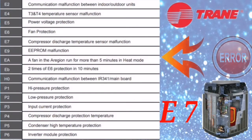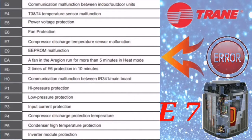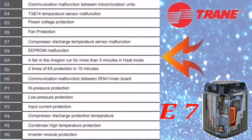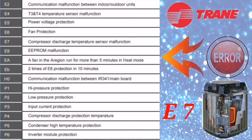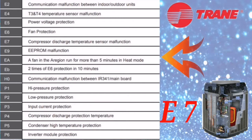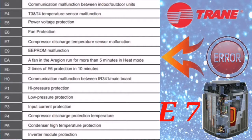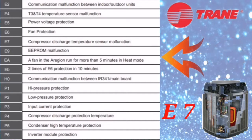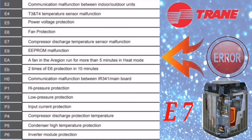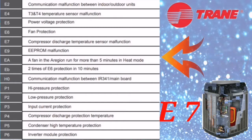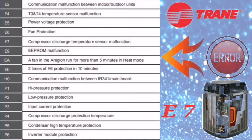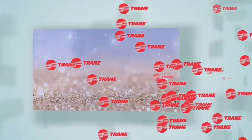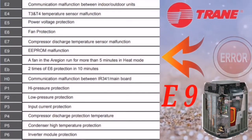The next error code is E7, which means compressor discharge temperature sensor malfunctioning. For this error, check only the sensor components. First, check the resistance of the sensor, then check the placement and the cable coming from the outdoor PCB to the sensor for any cuts or damage. Then check if the outdoor PCB is giving proper supply to the sensor — if not, the outdoor PCB needs to be changed.